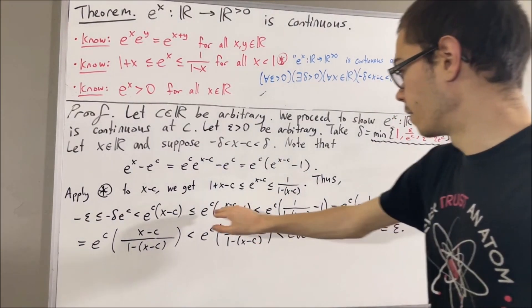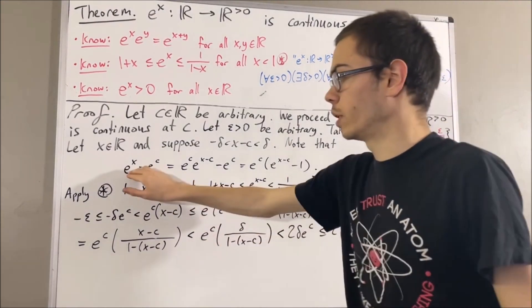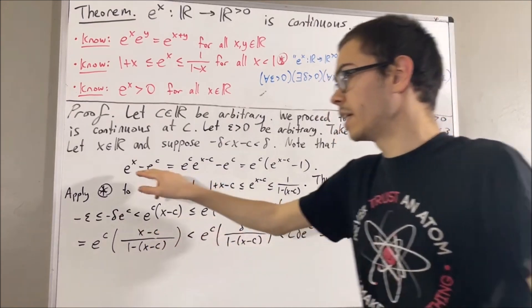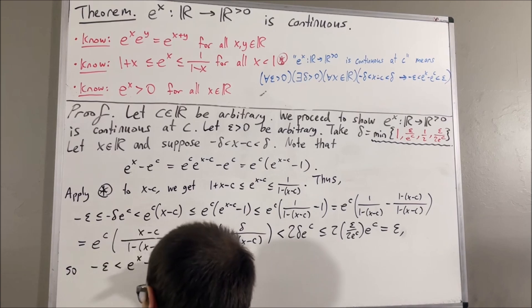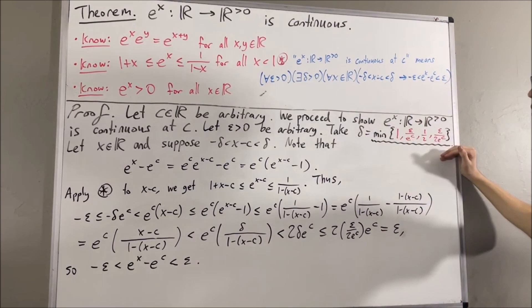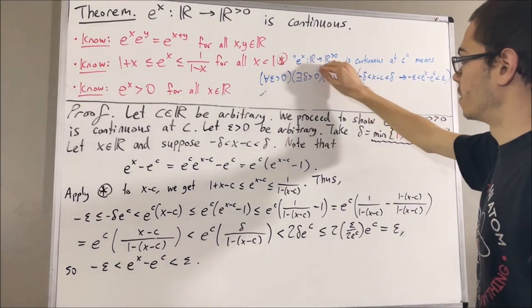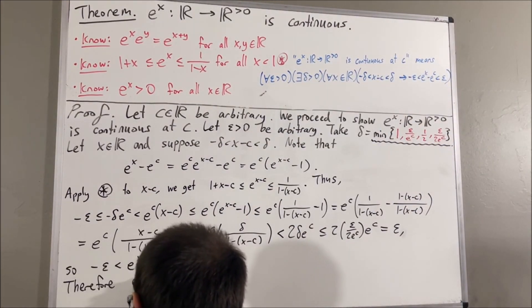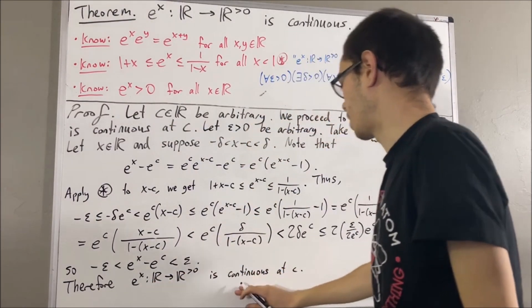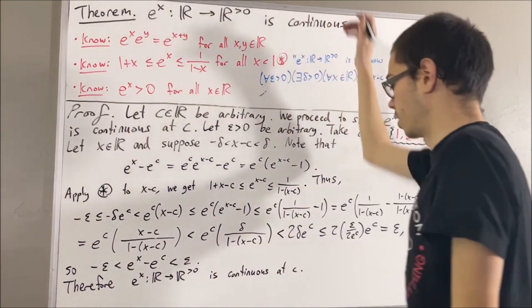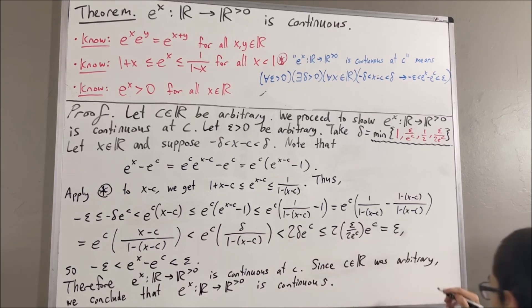So, what have we done here? We have that this expression lies between negative epsilon and positive epsilon. But remember, this expression is equal to e to the x minus e to the c. So, what we've really shown here is that e to the x minus e to the c lies between negative epsilon and positive epsilon, which is exactly what we wanted to show. So, we have arrived at this. And with this choice of delta, we are able to make this argument and prove this statement. So, since we have proven this statement, this means we have proven that this function is continuous at c. And since c was arbitrary, we have shown that the exponential function is continuous at every real number c. So, the exponential function is continuous. And so, this completes the proof.